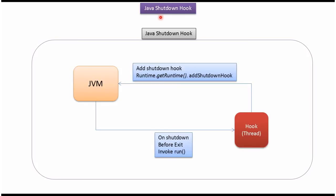In this video tutorial I will cover shutdown hook. A hook is nothing but a thread. Using the addShutdownHook method of Runtime, we can add a shutdown hook to the JVM, and before the JVM exits, the JVM will invoke the run method of the hook.